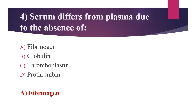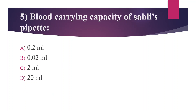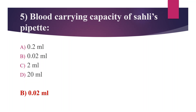Fifth question: blood carrying capacity of the Sahli pipette. Option A: 0.2 ml. Option B: 0.02 ml. Option C: 2 ml. Option D: 20 ml. The answer is Option B, 0.02 ml, that is 20 microliters.